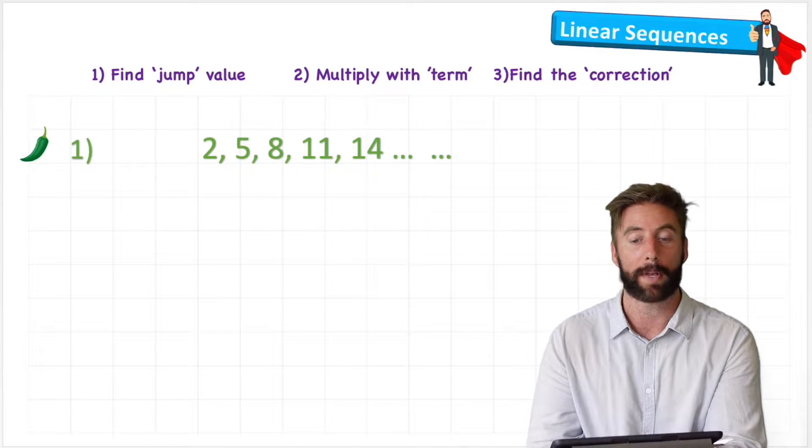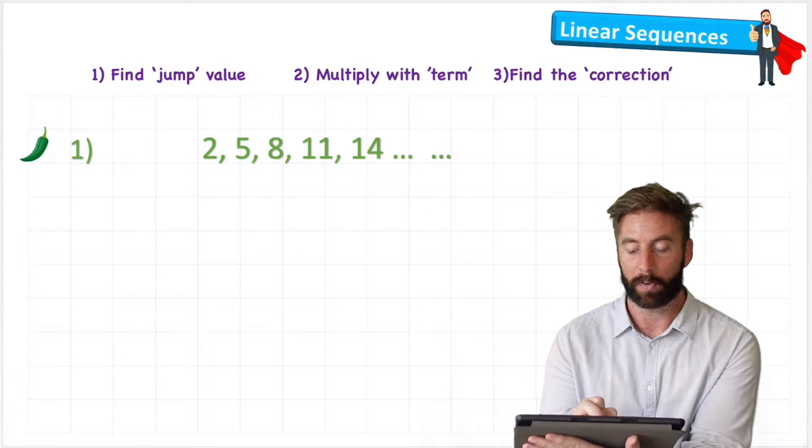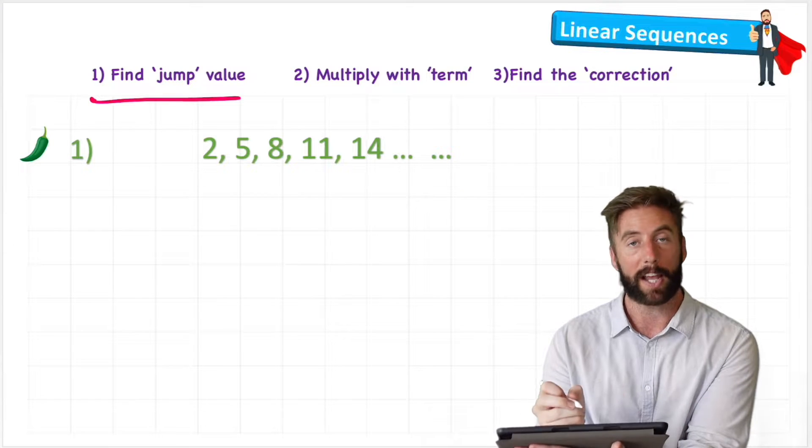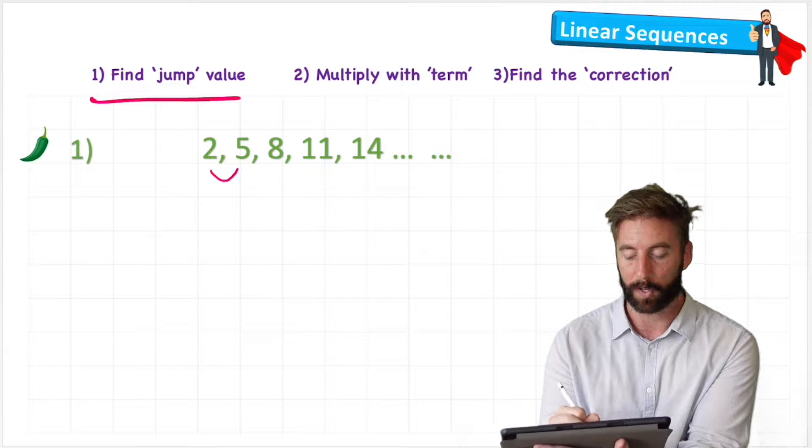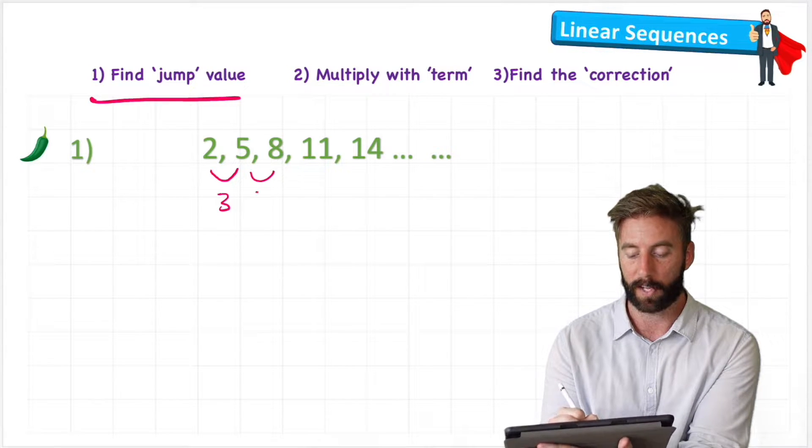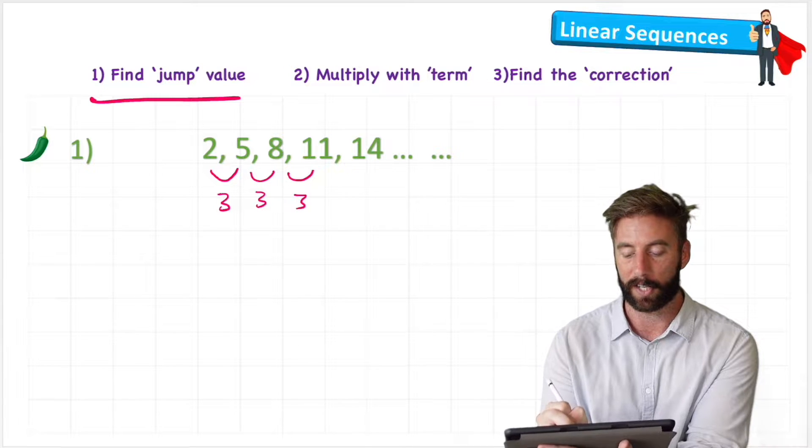Let's have a look at what I mean with question one and let's look at step one, finding the jump value. So as we said before, the gap between 2 and 5 is 3, 5 and 8 is 3, 8 and 11 is 3, et cetera. So my jump value for this sequence is 3.